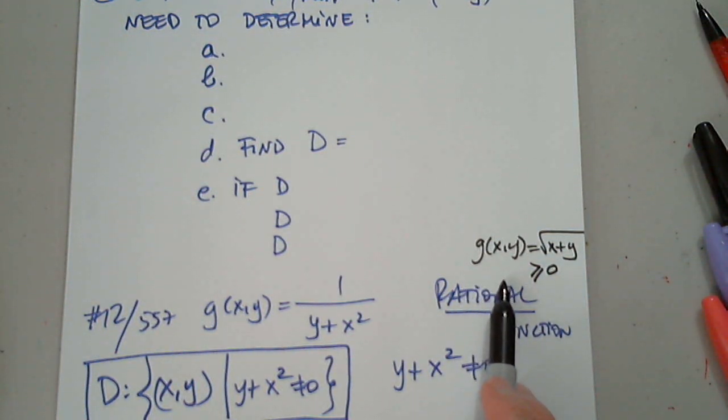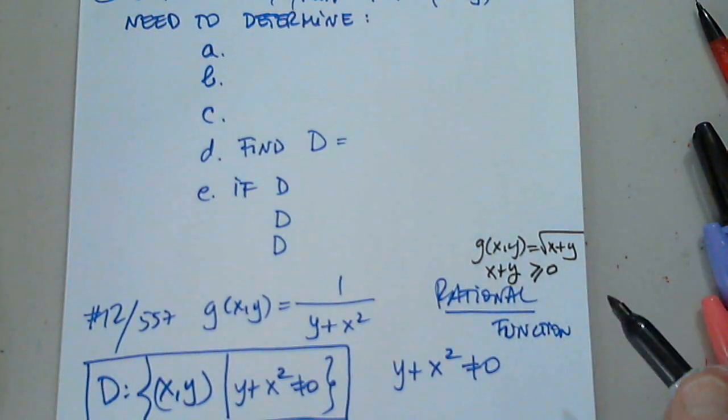Greater than or equal to zero. But you didn't say what? x plus y. Perfect. So the domain for this one would be all real numbers, all ordered pairs x comma y, having the property that x plus y is greater than or equal to zero. Perfect. Excellent.